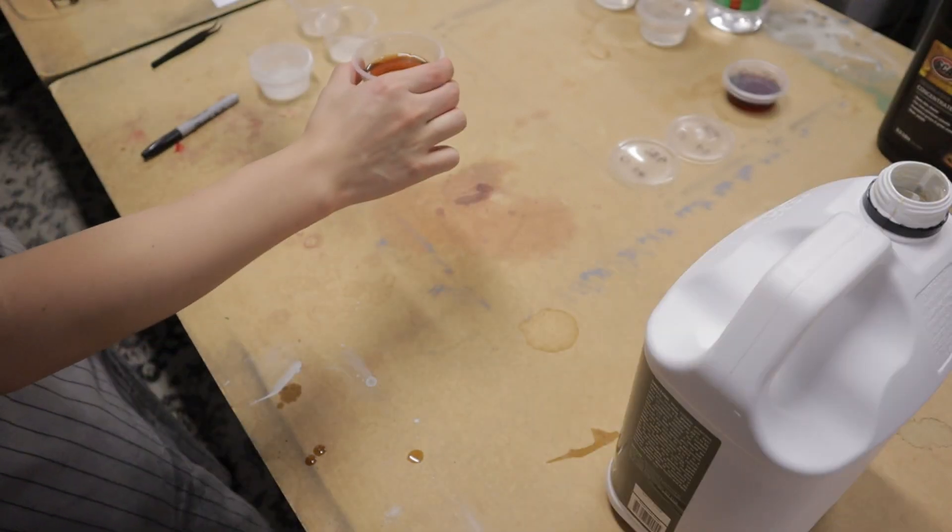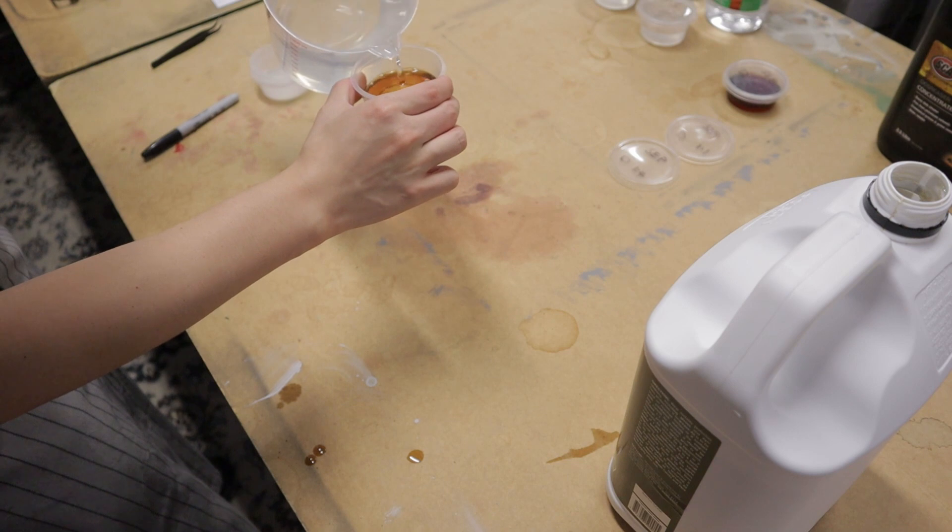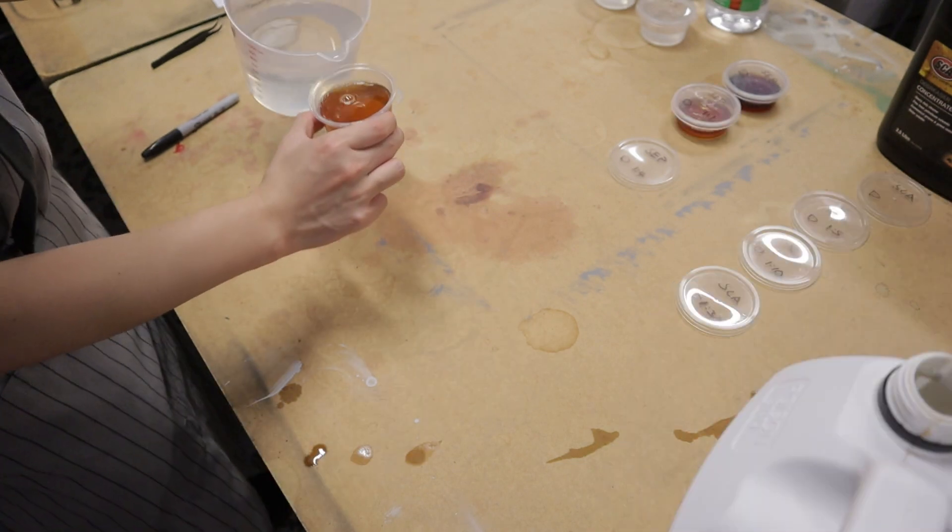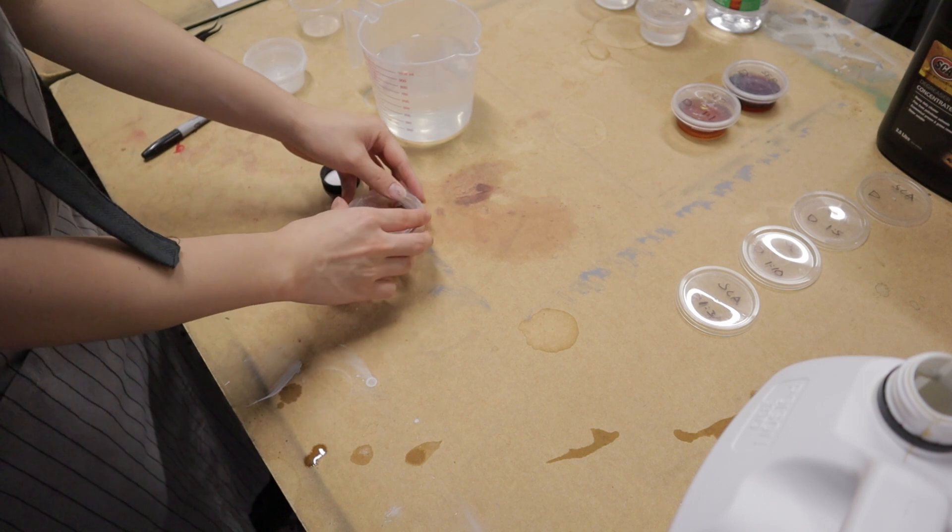According to the instructions, for heavy cleaning, it's 1 part degreaser to 1 part water. And for medium cleaning, it's 1 part degreaser to 4 parts water.